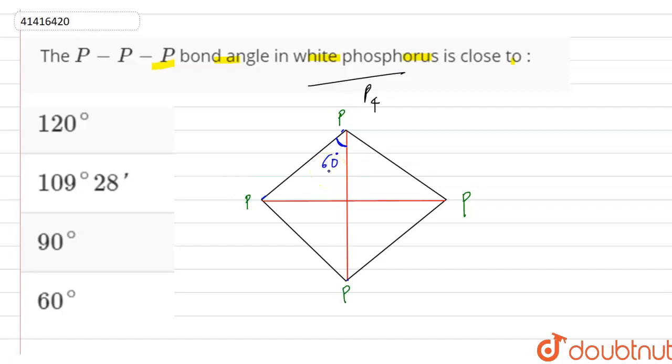So we can say that the four phosphorus atoms are at the corners of the regular tetrahedron. And here we have each phosphorus atom. You can see three other phosphorus atoms are bonded. Which bonds are? These are covalent bonds.